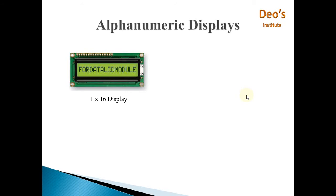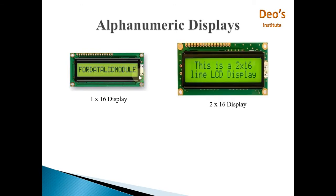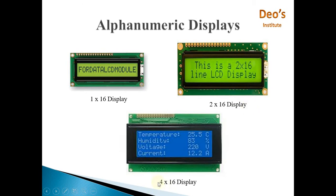Alphanumeric displays are displays in which you can display numbers and alphabets. There are various commonly used alphanumeric displays. The 1x16 display contains just a single line with a maximum of 16 characters — either a digit or an alphabet. The 2x16 display has 2 lines and each line can have a maximum of 16 characters. Today we are going to see how these types of displays can be interfaced with the 8051 microcontroller.